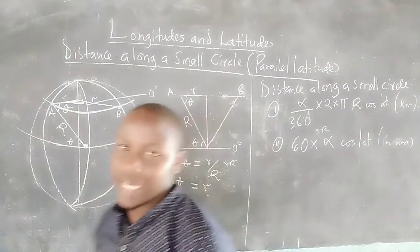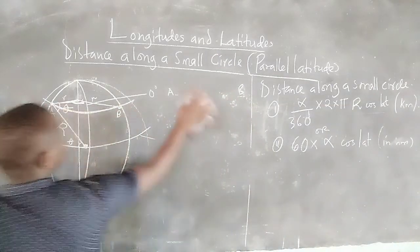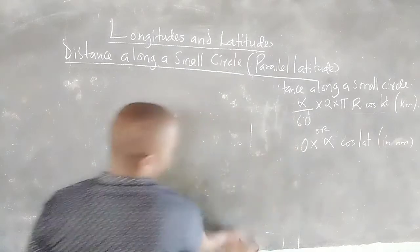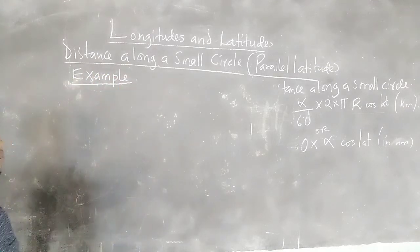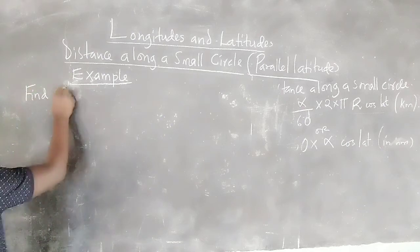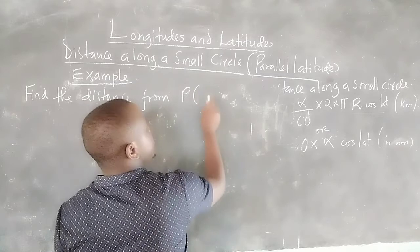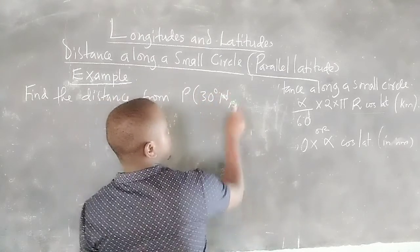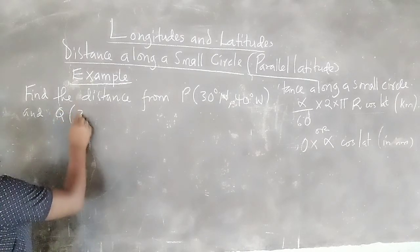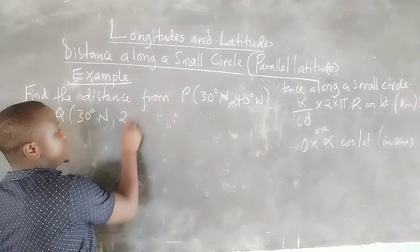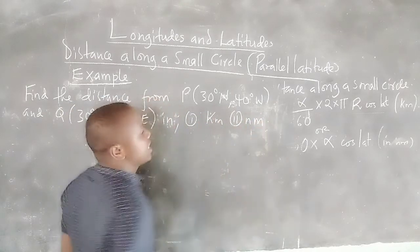Now we take an example involving small circles. Find the distance from P, which is 30°N 40°W, and Q, which is 30°N 20°E — firstly in kilometers and secondly in nautical miles. Note that both P and Q are on latitude 30° North, so we are measuring along a small circle.